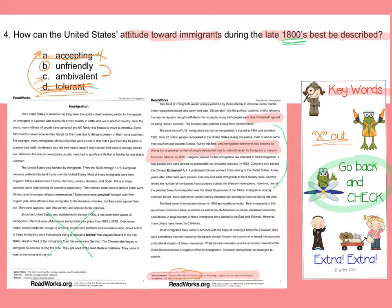If you're not sure what ambivalent means, you do know what unfriendly means. Coming back to the definition of discriminated — treated unfairly — or thinking about people demanding laws to make it harder, unfriendly really seems to describe that attitude. Therefore, unfriendly is your best answer choice. Ambivalent actually doesn't mean accepting — I challenge you to make that a word wizard word and look it up.